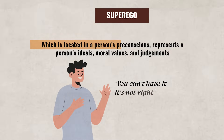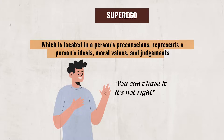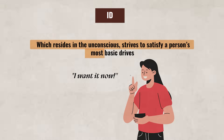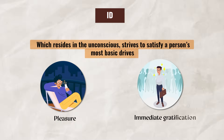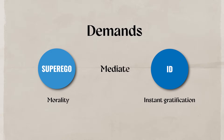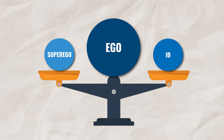The superego, which is located in a person's pre-conscious, represents a person's ideals, moral values, and judgments. It guides behaviors based on societal expectations and a person's view of what's right and wrong. On the other hand, the id, which resides in the unconscious, strives to satisfy a person's most basic drives, generally focusing on pleasure and immediate gratification, such as hunger, thirst, and sexual desires. The id does not concern itself with morality or consequences. Since the superego and the id have conflicting demands, Freud proposed that the ego must mediate between them. The ego balances the id's desires and the superego's moral constraints, making rational decisions based on reality, and employs defense mechanisms to help protect an individual from anxiety and psychological distress.